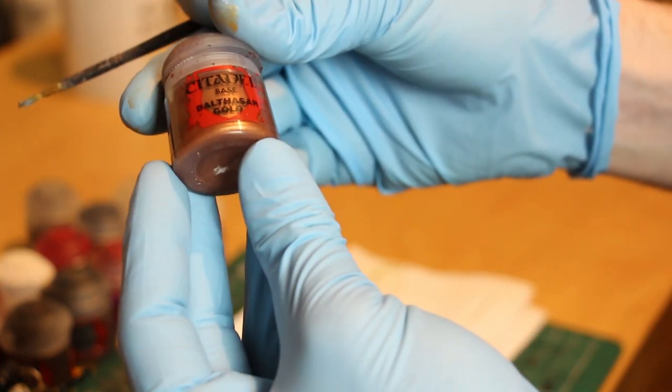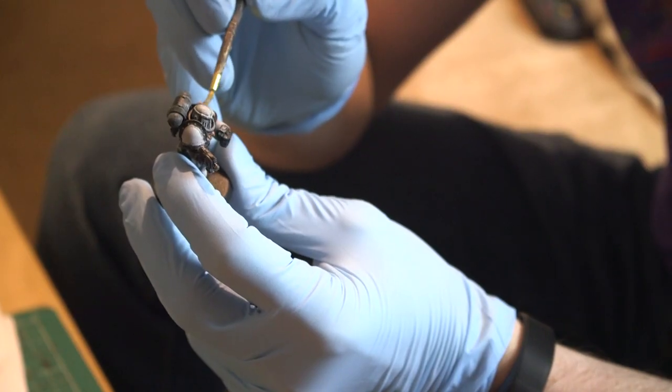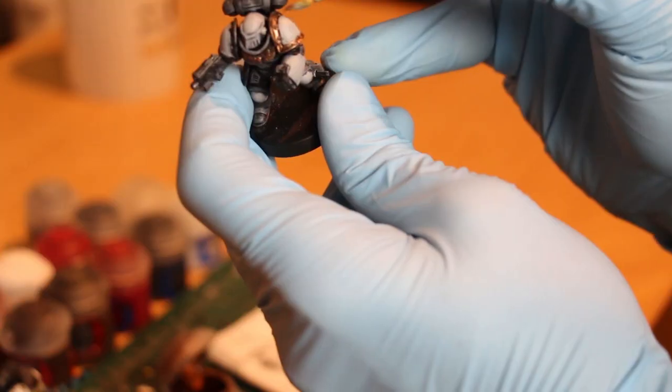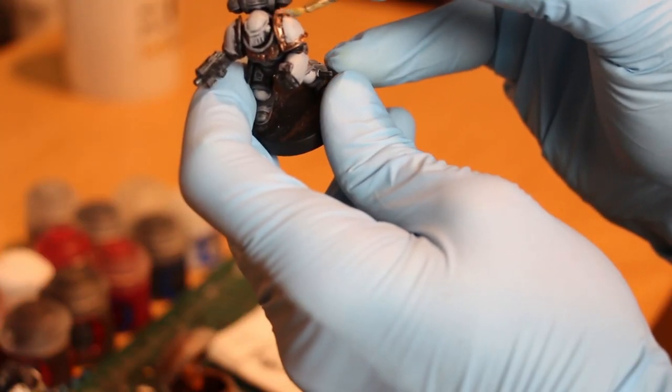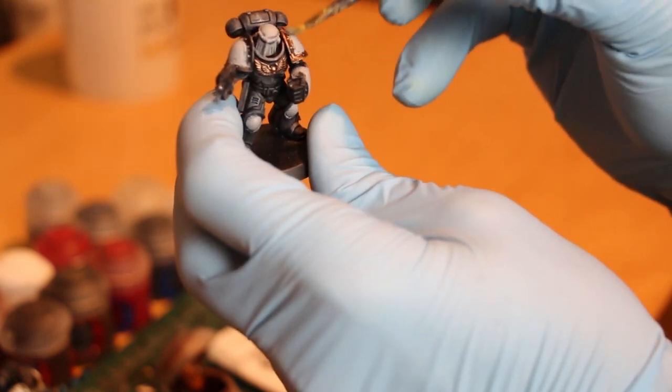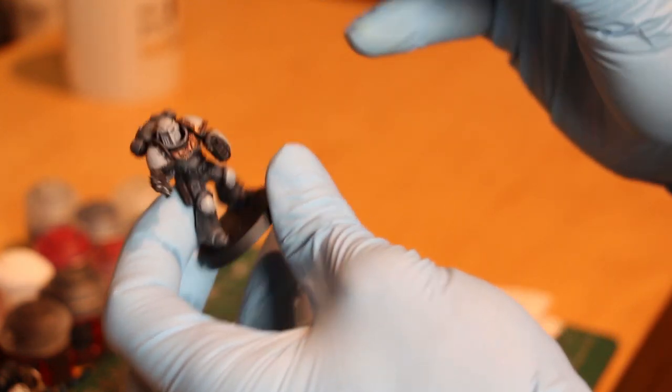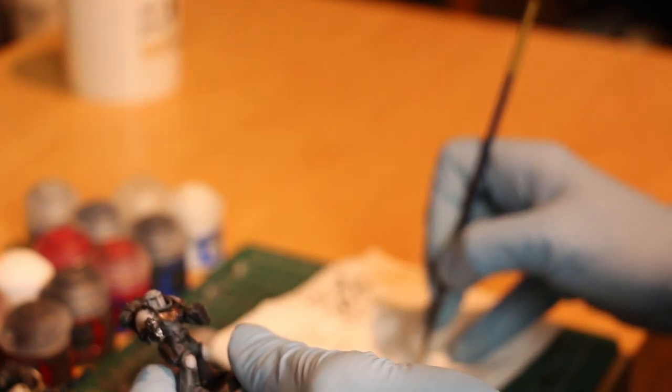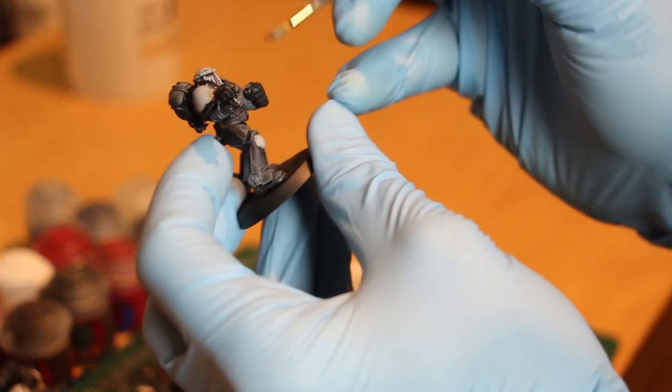Now for the gold trim of my armor, I'm going to use Balthazar Gold. Again I'm going to remove most of this from my brush. I don't want a huge amount of it. I don't want it going everywhere like our matte layers. I just want it to really give depth and this is absolutely crucial with metal. I'm going to go over the areas where I need it. So that's the outside of the shoulder pad, the small circlet of metal on the helmet, and of course the large aquila on the chest plate.